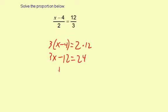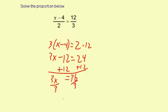Now we're going to add 12 to both sides. So 3x equals 36 divided by 3. x equals 36 divided by 3, which is 12.